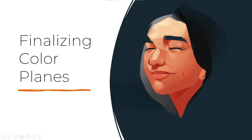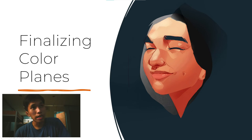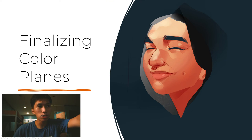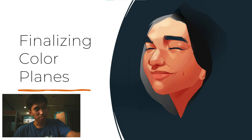After adding the base color, nag-proceed na ako sa finalizing color planes. Dito nag-design at nag-decide ako ng colors na gagamitin ko for the light parts, for the light planes, and the shadow planes of the face na aking dinodrawing. Basta ina-adjust ko kung ano yung appealing sa aking mata. Kung makikita ninyo, yung mga highlights ko ay may mga shapes din — kapag angular, napaka-appealing niya sa aking mata. Gustong-gusto ko yung mga ganyang shapes. Kaya ganyan ang itsura ng light planes, dark planes, at pati ng highlights.